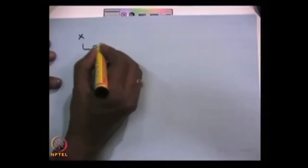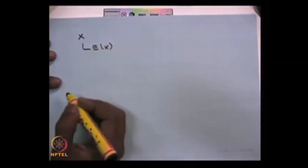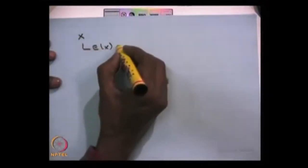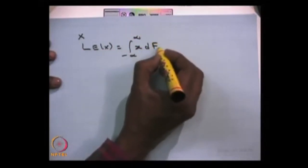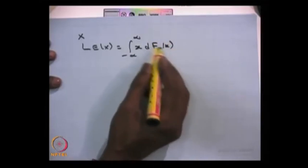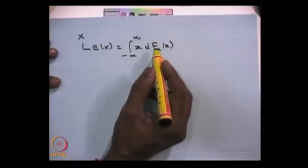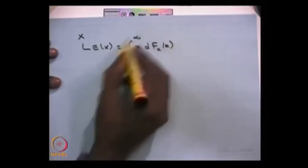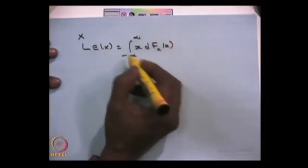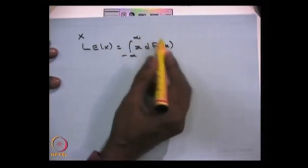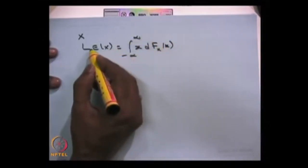Now we are moving to the next concept — there are some moments we can find from a random variable. Suppose you have a random variable X; you can find the expectation of X if it exists. The expectation of X can be written as the integral from minus infinity to infinity of X times dF(X), where F is the CDF of the random variable. Whether the random variable is discrete, continuous, or mixed type, if this integration exists, then the expectation equals this value. If the integration diverges, then you cannot write the expectation of X.